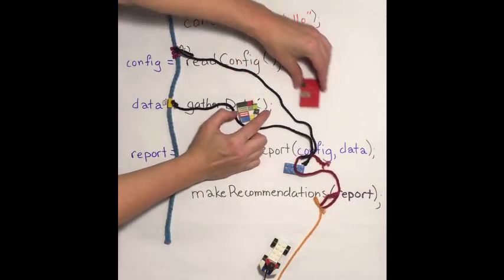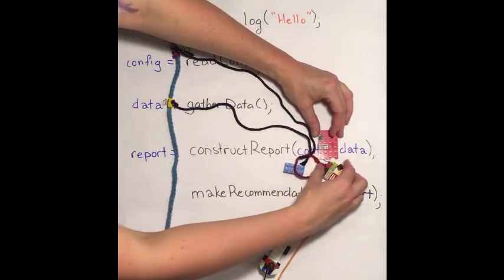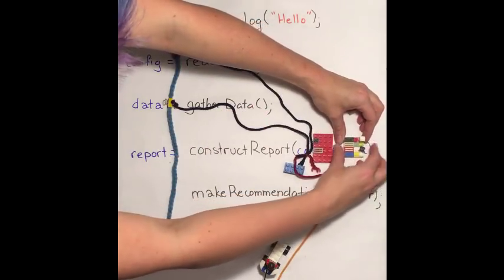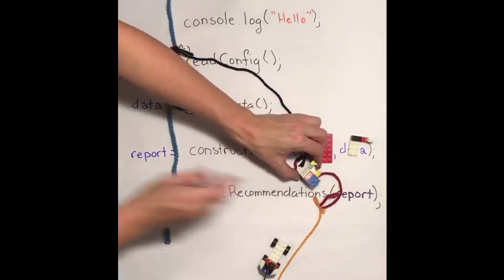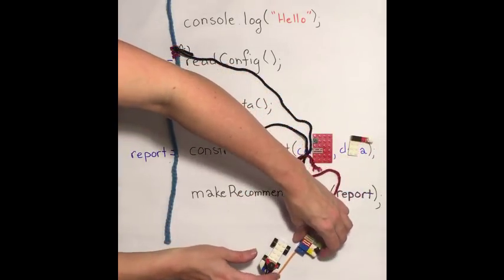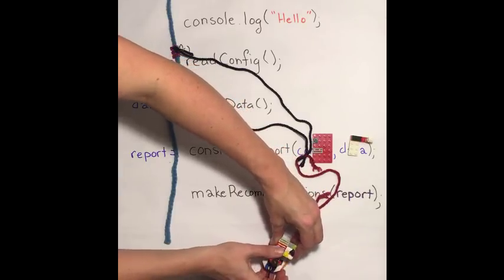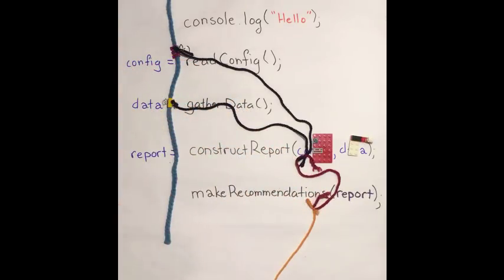Eventually, the config comes through from the file, the data comes through from the network, construct report's code puts those together and produces the report and passes it into the code at make recommendations, which sticks them on the little car, and whoosh, off we go.